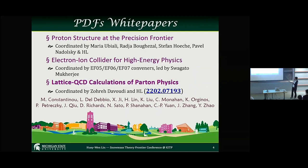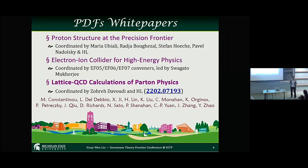Within the strong QCD EF0567 working group, we actually have a number of PDF white papers. I don't really have time to go through all of them today. I want to point out that there is a precision PDF effort coordinated by many people, and then there are even bigger ones. I focus on the intersection between the high energy parton distribution functions associated with the electron-ion collider. Today I'll be mostly focused on the white paper we put up on our latest QCD calculation on parton physics — it's actually only 14 pages long, so you can read it in a coffee break.